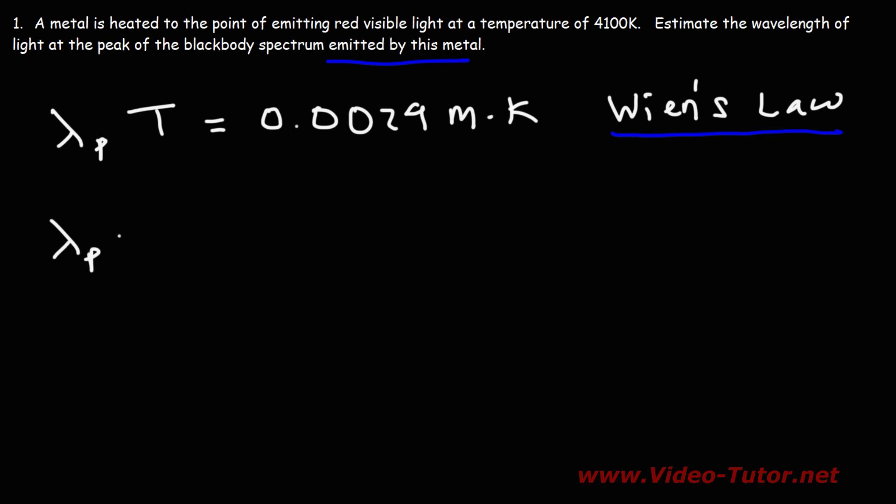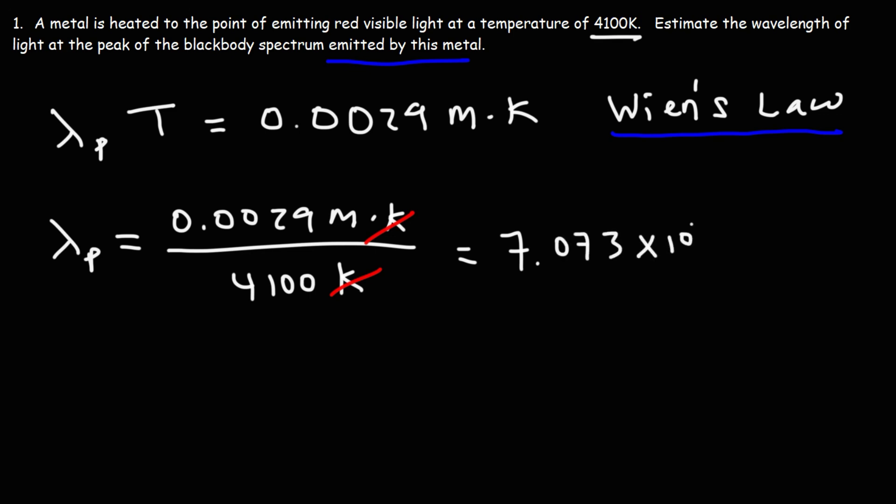The wavelength at peak intensity is going to be 0.0029 meters times Kelvin divided by the temperature. We have the Kelvin temperature at 4100 Kelvin. So the Kelvin units will cancel, and it's going to be 0.0029 divided by 4100. You should get 7.073 times 10 to the negative 7 meters.